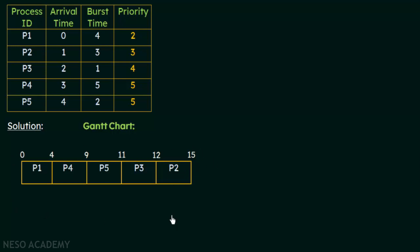This is how we form the Gantt chart for a set of processes when they follow non-preemptive priority scheduling. Since it is non-preemptive, it is a bit easier to form the Gantt chart because you are not going to preempt any processes. But keep in mind the arrival times and the priorities. In this case, when P1 was executing from 0 to 4 milliseconds, all the other processes had already arrived and were waiting in the ready queue, so we just had to assign the CPU based on highest priority.